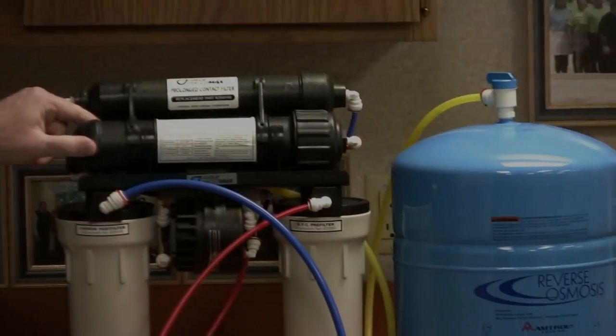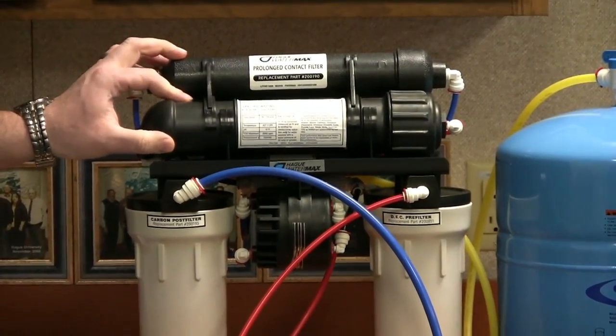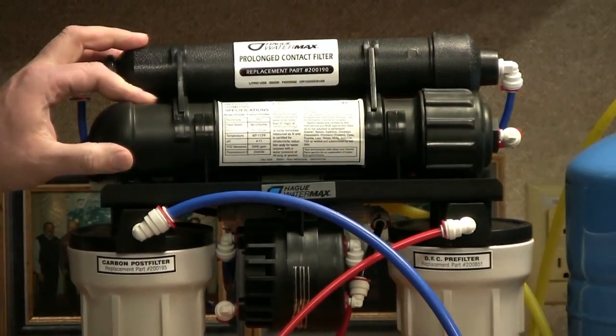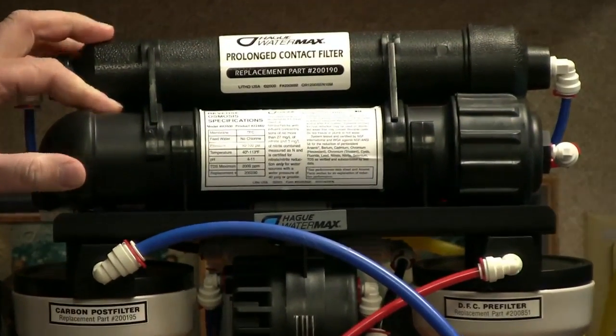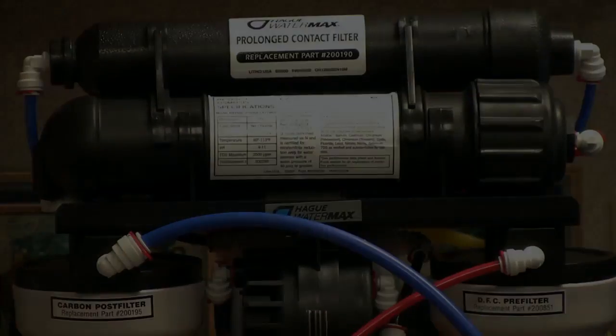The first thing that we want to look at is the membrane. The membrane is what actually reduces all the TDS. If your membrane is at the end of its life cycle it's probably exhausted or fouled and just needs to be replaced.